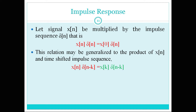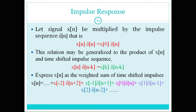I need to shift my impulse response to position 1 to get the value x of 1. Similarly, in this fashion I can have all values of x of n at different positions. This can be expanded as: x of minus 2 times delta of n plus 2, plus x of minus 1 times delta of n plus 1, plus x of 0 times delta of n, plus x of 1 times delta of n minus 1, plus x of 2 times delta of n minus 2, and so on. In short form: x of n equals sigma from k equals minus infinity to infinity of x of k times delta of n minus k. We will use this in our convolution sum.